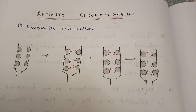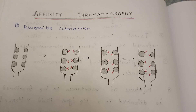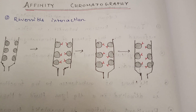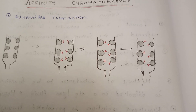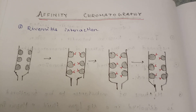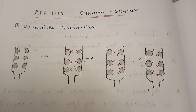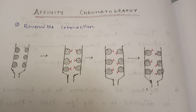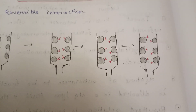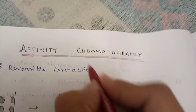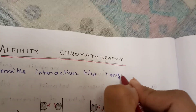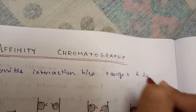It's a chromatography technique that actually enables the purification of a biomolecule with respect to biological function or individual chemical structure. The basis is reversible interaction — affinity chromatography separates proteins on the basis of reversible interaction between a target and a specific ligand.